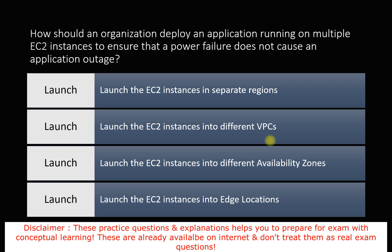Next question: how should an organization deploy an application running on multiple EC2 instances to ensure that a power failure does not cause an application outage? The options are: launch EC2 instances in separate regions, different VPCs, different availability zones, or edge locations.